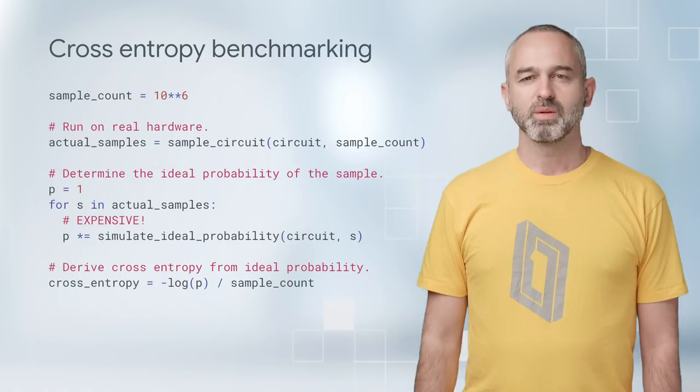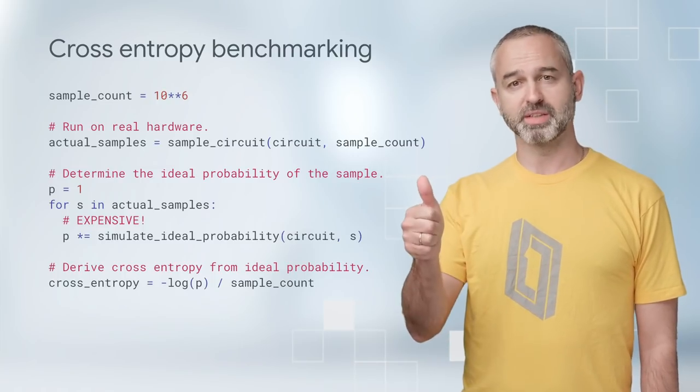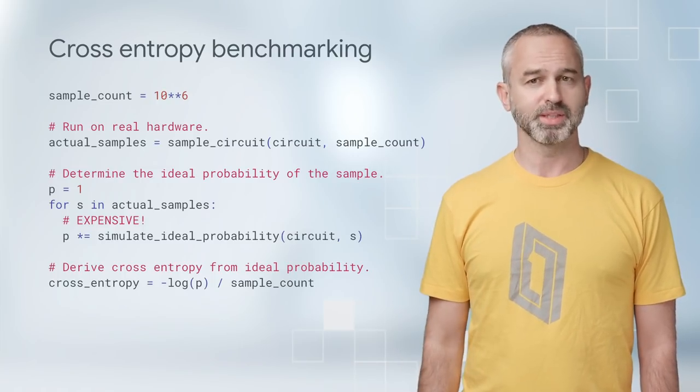Simulating interference of the exponential number of computational paths in the quantum circuit takes exponential time. We can check if we obtain the correct fingerprint in the experiment and measure the probability of error.